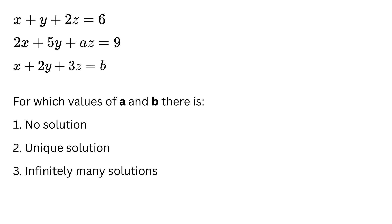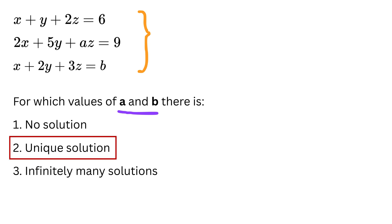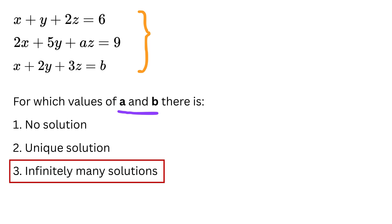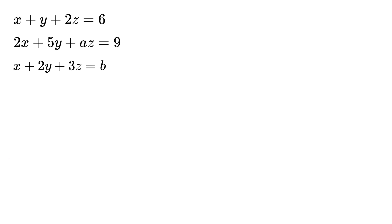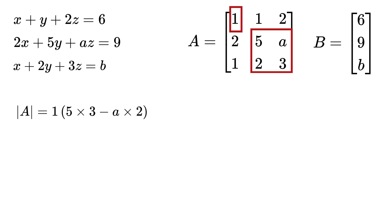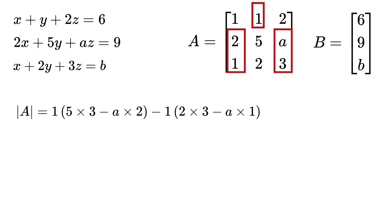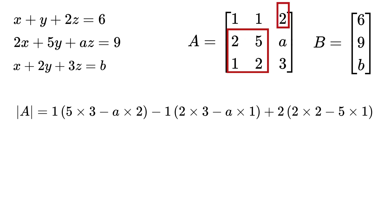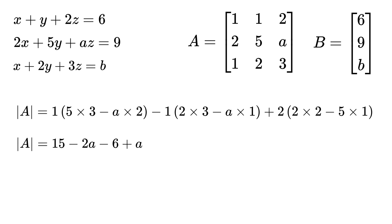Now it is straightforward to solve our given problem. We need the values of a and b for which there is no solution, exactly one solution, or infinitely many solutions. The first step is to convert the equations into matrix form. The next step is to compute the determinant of the coefficient matrix A, which equals 1·(5·3 − a·2) − 1·(2·3 − a·1) + 2·(2·2 − 2·2).